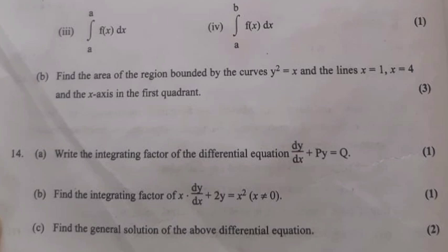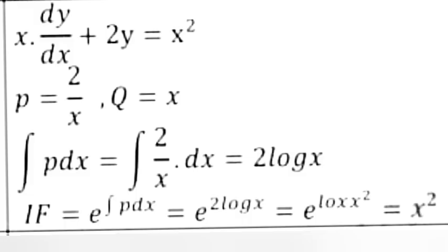Question 14B: Find the integrating factor of x·dy/dx + 2y = x², x ≠ 0. Answer: Dividing, dy/dx + (2/x)y = x. So P = 2/x, Q = x. ∫P dx = ∫(2/x) dx = 2 log x. Integrating factor = e^(2 log x) = e^(log x²) = x².